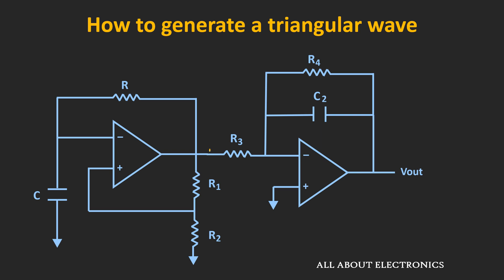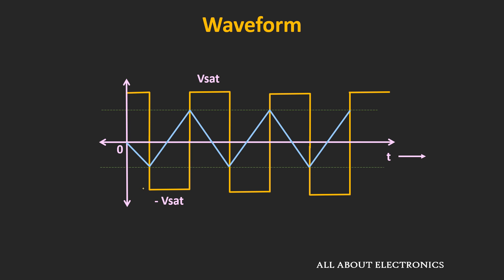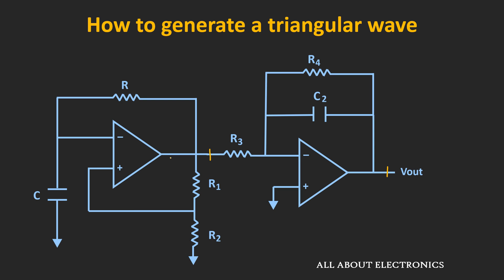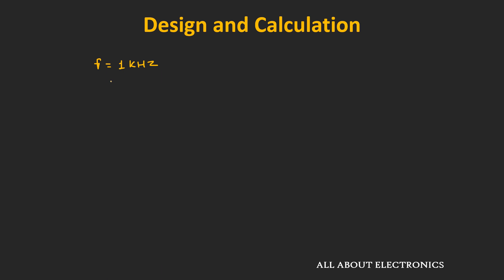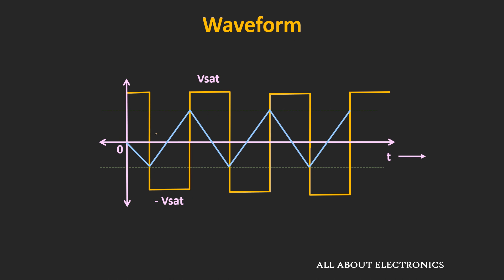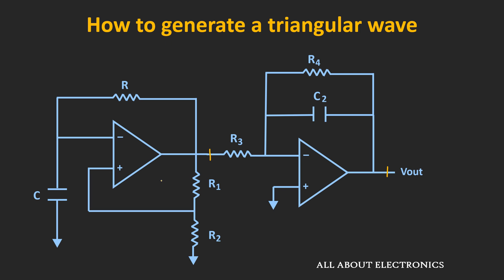If we observe the waveform at the two nodes, the yellow waveform is the output of the astable multivibrator, varying between positive and negative saturation voltages. Once we give this square wave as an input to the integrator, it is possible to generate the triangular wave. Note that the frequency of the square wave and the triangular wave are the same, so first we need to design an astable multivibrator of 1 kHz frequency as our design target.